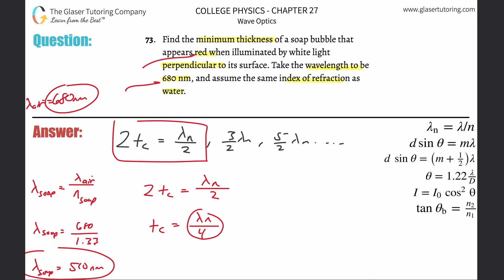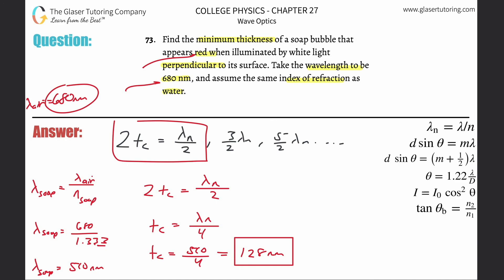Now we divide 510 nanometers by 4. Using the exact calculator value, this works out to be about 127–128 nanometers. So the minimum thickness of the film is approximately 128 nanometers for light incident perpendicular to the surface to produce constructive interference and appear red to your eye. Check out number 71 for the concept.